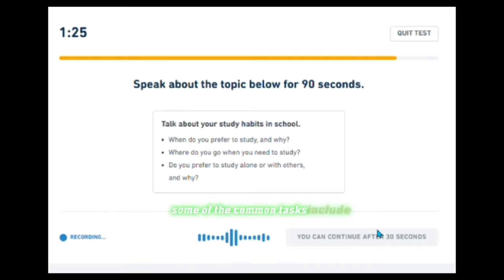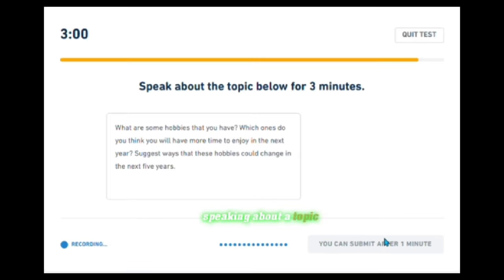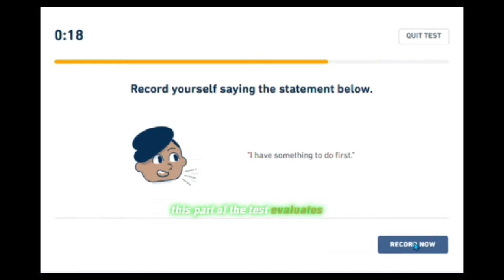Some of the common tasks include describing an image—you might see a picture and will be asked to describe what you see in detail. Speaking about a topic: you could be asked to speak on a specific topic or give your opinion on something. Responding to a question: the test may ask you a question and you'll need to provide a spoken response. This part of the test evaluates your pronunciation, vocabulary, grammar, and overall speaking fluency.